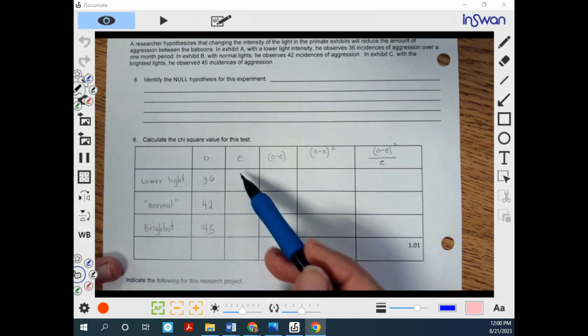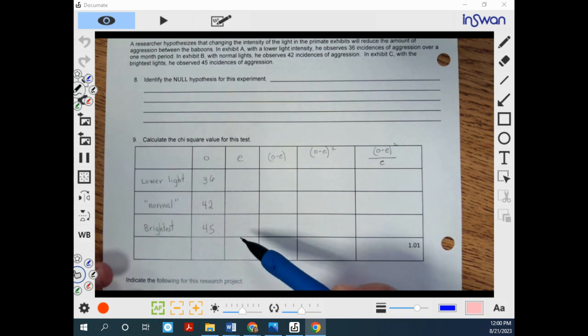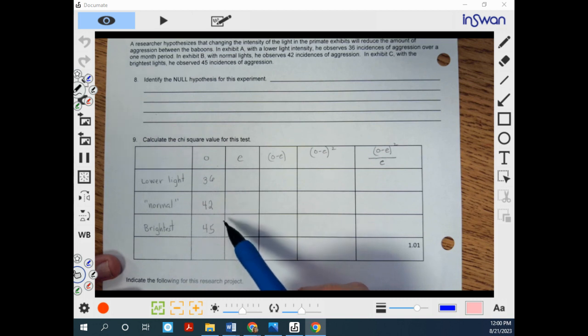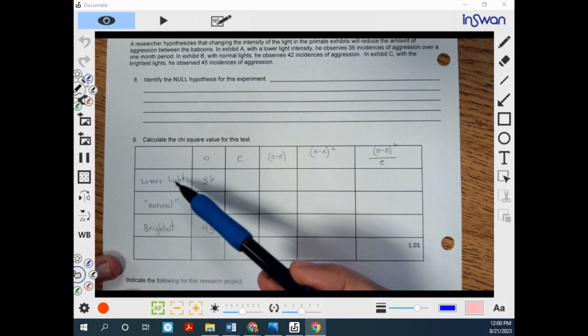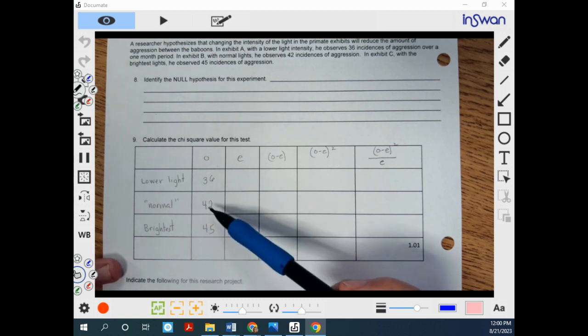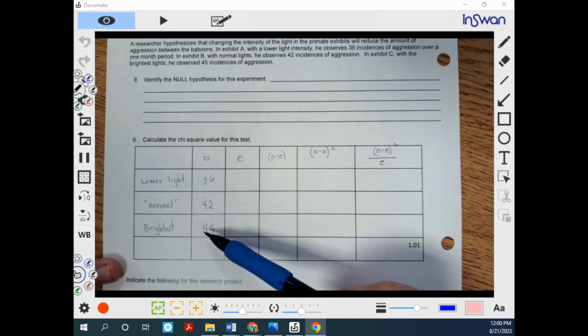Now, again, this is the column that will trip people up. We're going to have some kind of percent up here in the corner. If you think about it, if light is not having an effect, then we would expect an even number of incidences in our different exhibits.